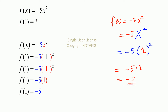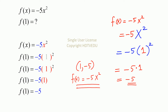So what is our point? Our point is (1, negative 5). Our function is negative 5 times x to the power of 2.